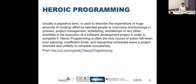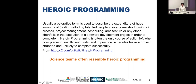Most people that start out in computational science begin with what is called heroic programming — doing whatever it takes to make a project work. This is defined as the expenditure of huge amounts of coding effort by talented people to overcome shortcomings in process, project management, scheduling, architecture, or any other shortfalls in software development execution in order to complete a project. Scientific teams often resemble heroic programming, and what is more troublesome is many do not see anything wrong with that approach.